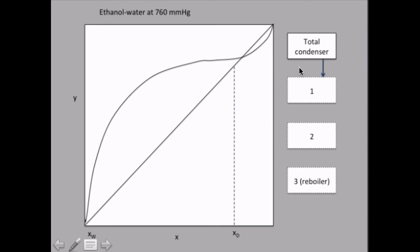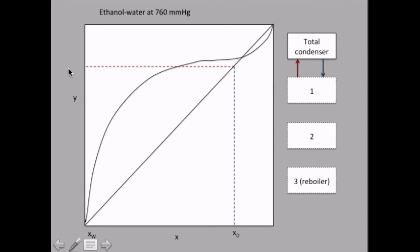Now what is the composition of the vapor that comes to the total condenser? Well, the total condenser doesn't add any separation — it just condenses everything that comes up, so the composition must be the same. So we just go up to the diagonal and then straight out.